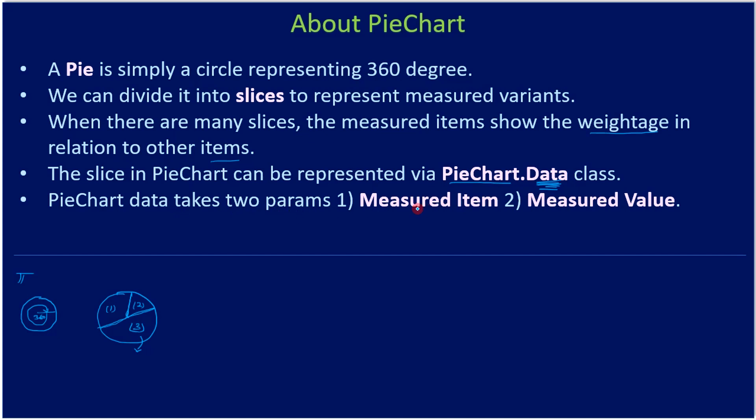This one takes two parameters: one is measured item, for example bike, and measured value, for example how much is the sales: 400. Likewise, you can put a number of data items: 20, 30, or 5, whatever items you want to add. Then pie chart will take care of this one for showing the relational information like what you see here.